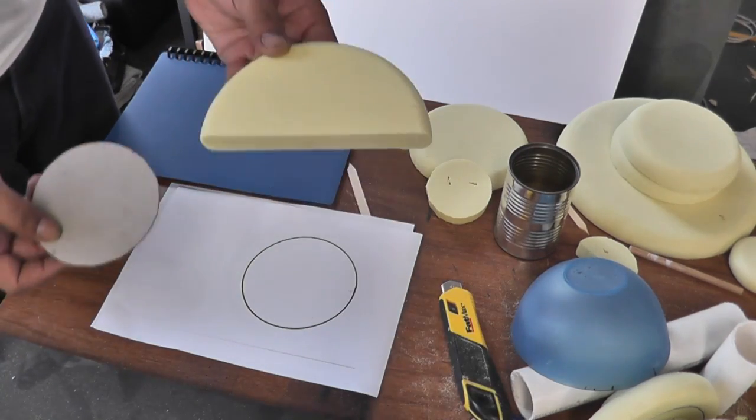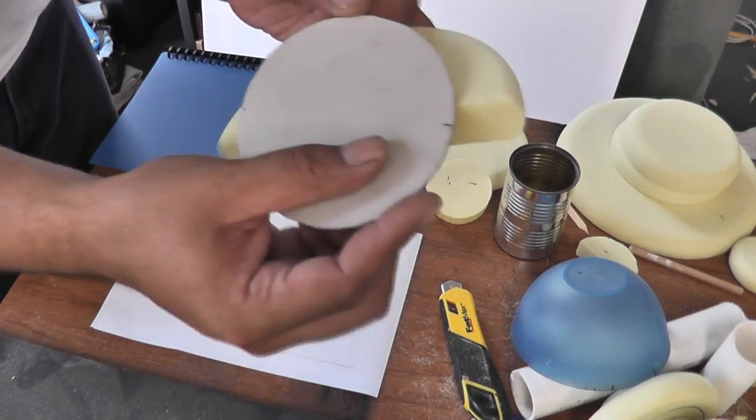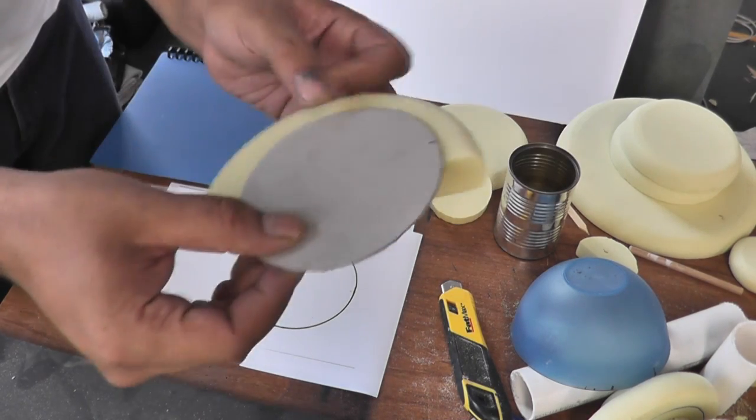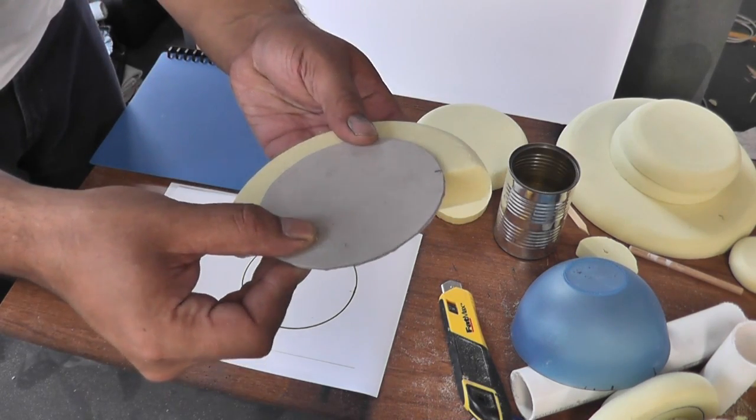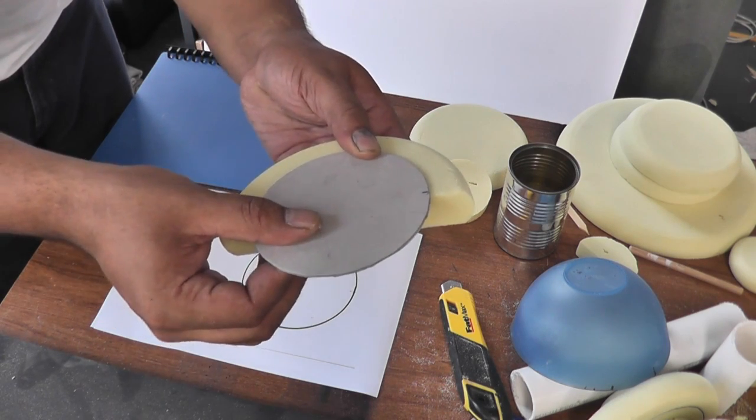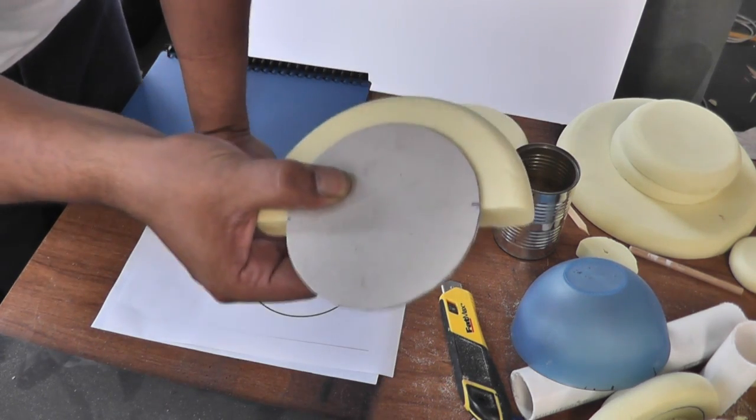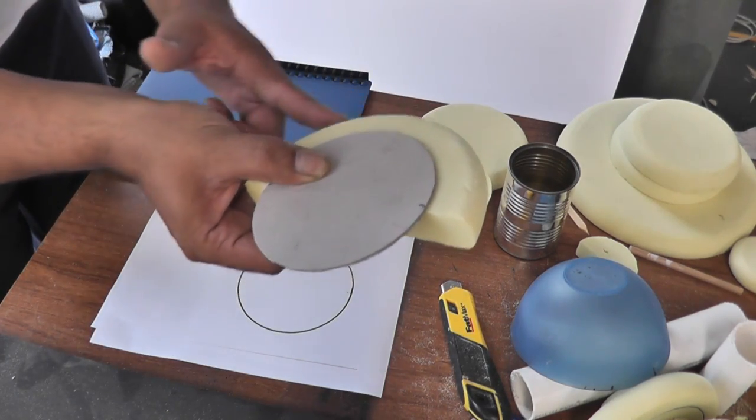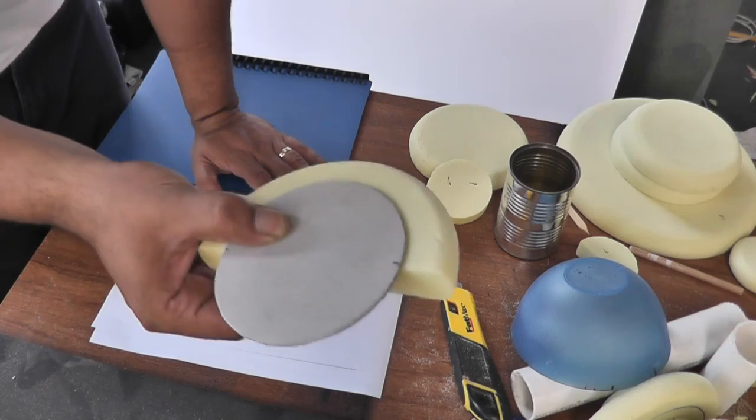So now I'm able to put that template, which you can see I've marked some edges here, one on this side, one on this side. I'm able to line that up on the piece of foam and then score around that. That way the diameter of my line around here is the same diameter as the bowl that I originally started with.